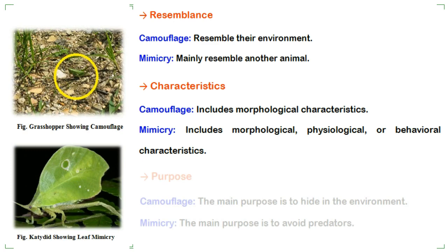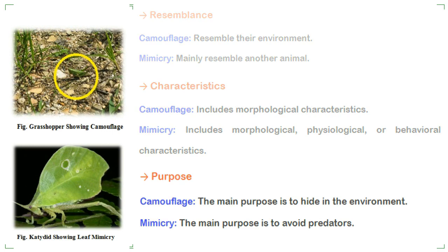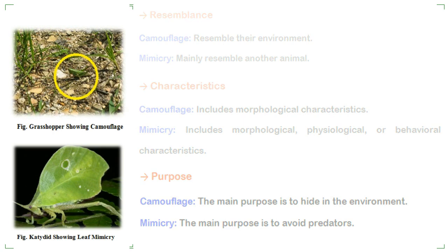Next we will see the main purpose of camouflage and mimicry. The main purpose of camouflage is to hide in the environment, while in the case of mimicry the main purpose is to avoid predators.